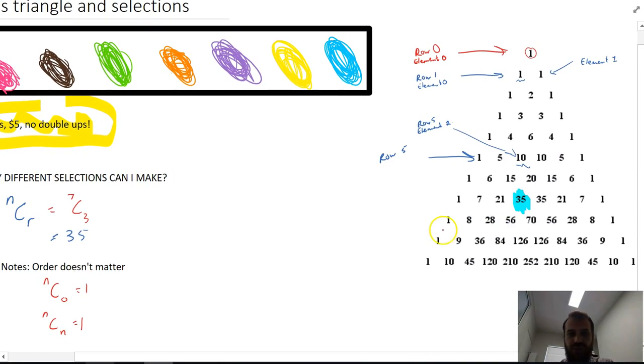And if you look at Pascal's triangle, NC zero, every single zeroth element is one, and also every last element is one. So if you're in the fifth row, the fifth element is one. If you're in the seventh row, the seventh element is one.